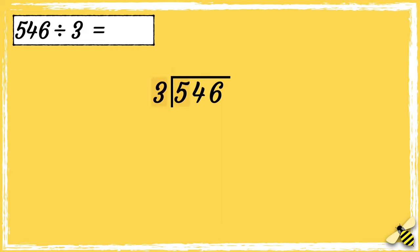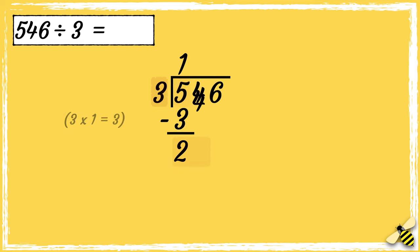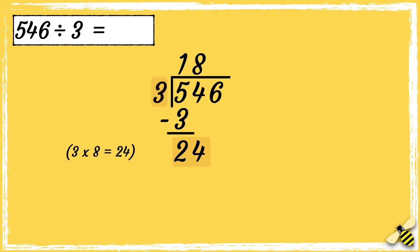So first, we need to see how many times 3 goes into 5. 3 times 1 is 3, so 3 goes into 5 once. We need to find out what's left over, so 5 take away 3 equals 2. We can now bring the second digit down. Now we can work out how many 3s go into 24. 3 times 8 is 24, so 3 goes into 24 eight times.